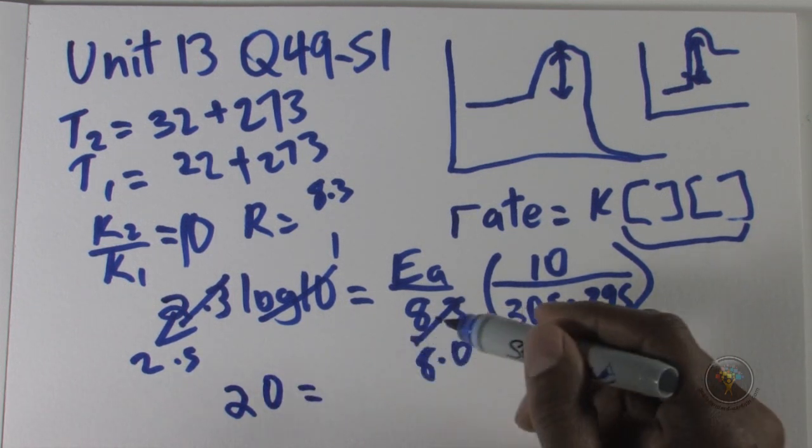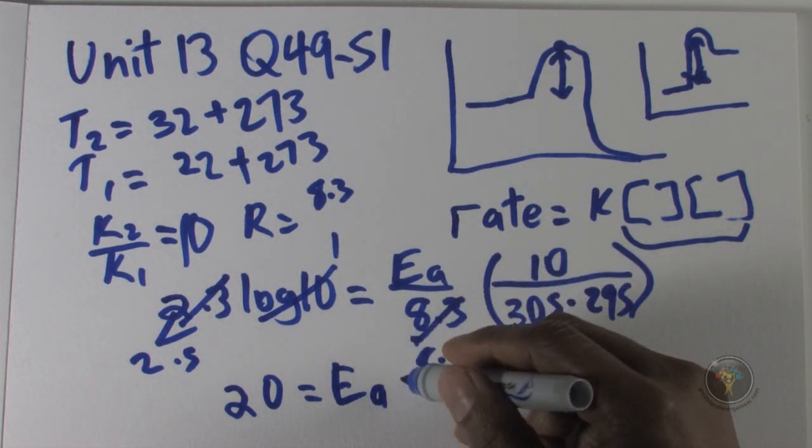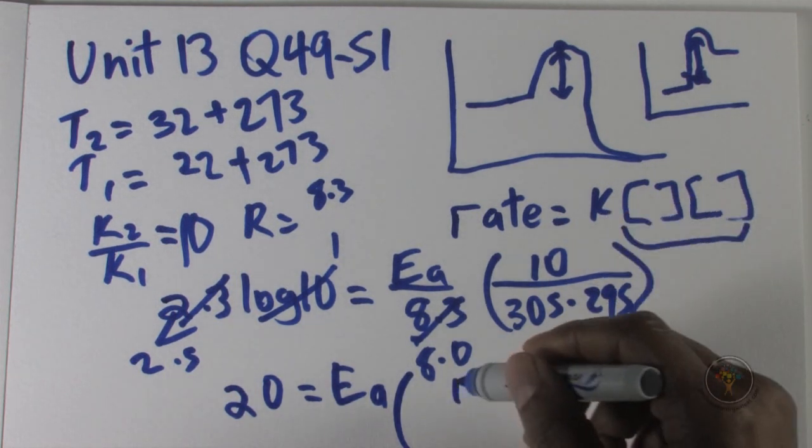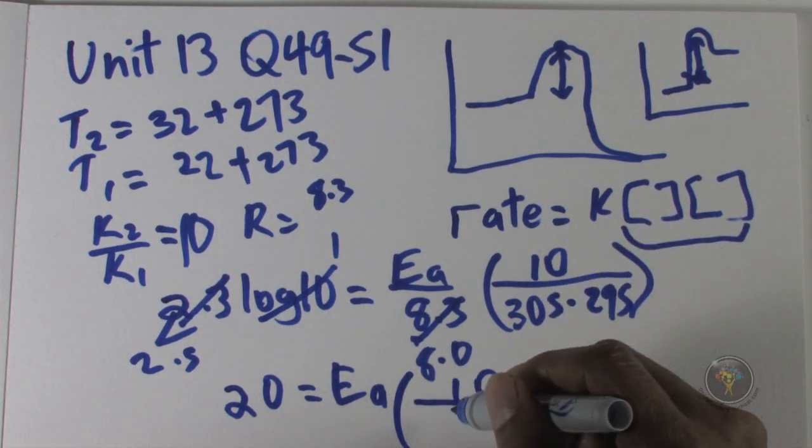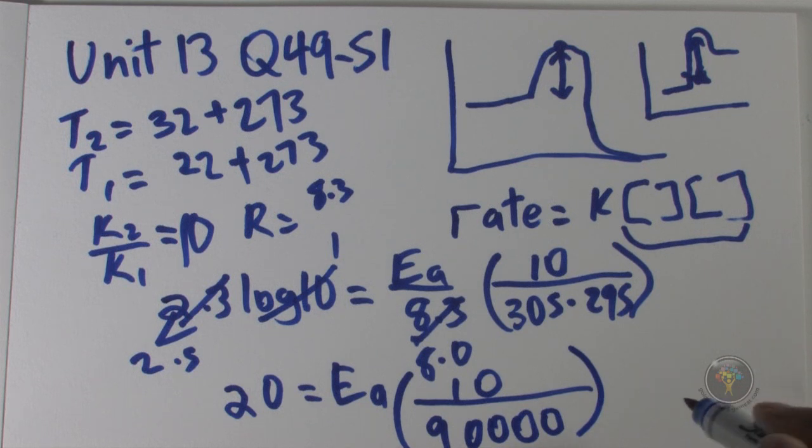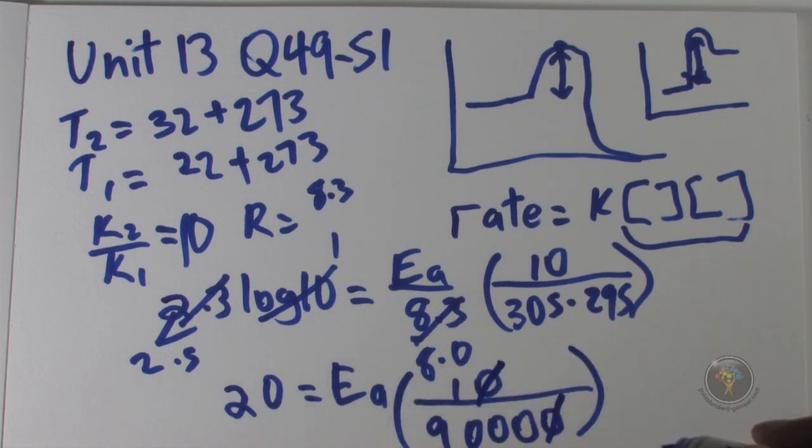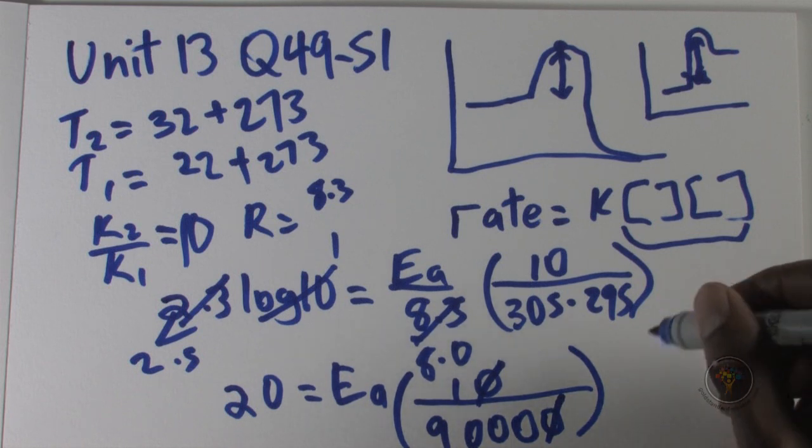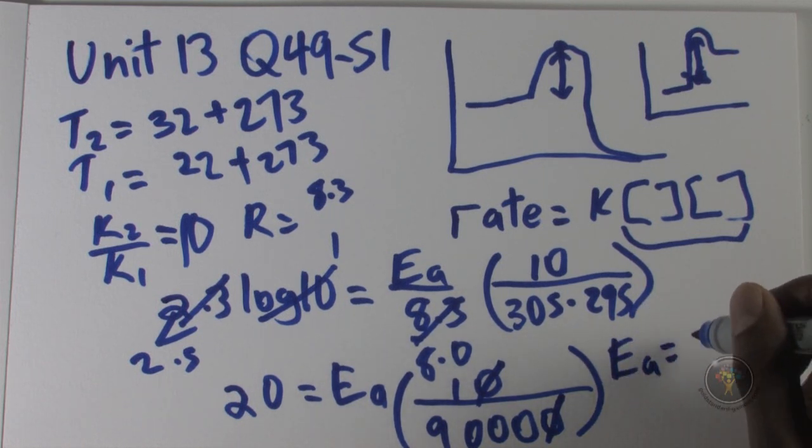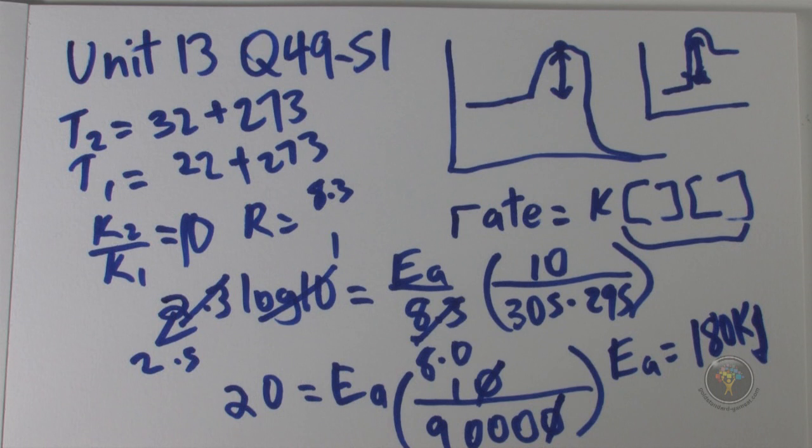With 8 in the denominator we multiply both sides by 8, and 8 times 2.5 is just 20. That equals Ea, the activation energy, which is 10 in the numerator, 300 times 300, so that's 9 with four zeros. One zero cancels, then we multiply both sides by 9000, and we get Ea equals 180 kilojoules. We look for the answer and we have 200 kilojoules, and that's close enough. So 50 is D.